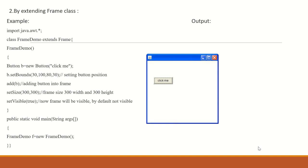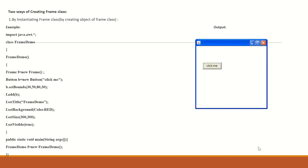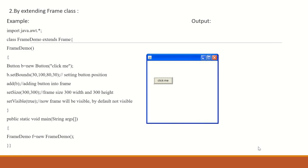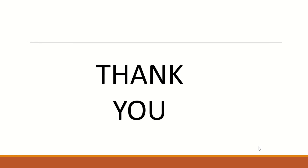Today we learned what is AWT, the hierarchy of AWT, what are objects, what is a component, what is a container, how to create a frame, and what is a frame. There are two ways to create a frame: by instantiating the Frame class, and by extending the Frame class. Thank you for watching.